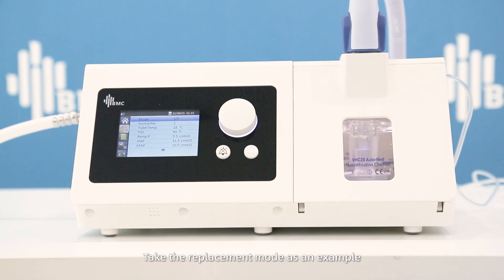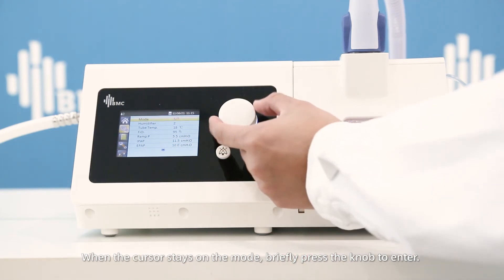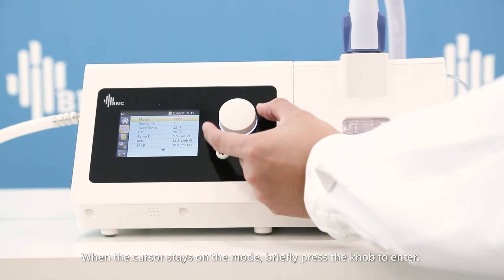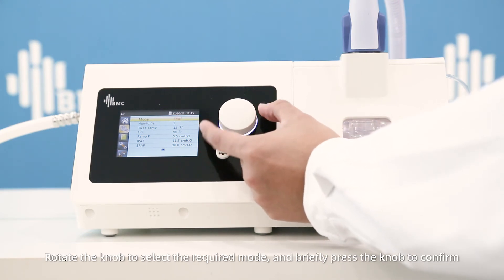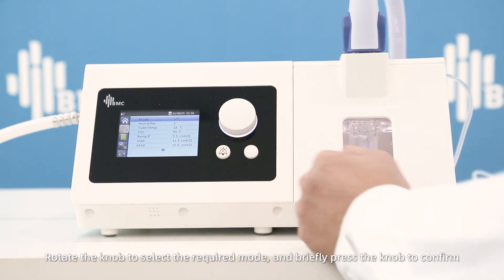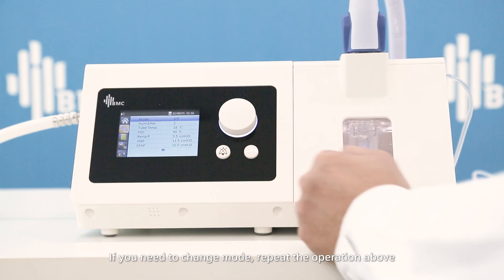Take the replacement mode as an example. When the cursor stays on the mode, briefly press the knob to enter. Rotate the knob to select the required mode and briefly press the knob to confirm.